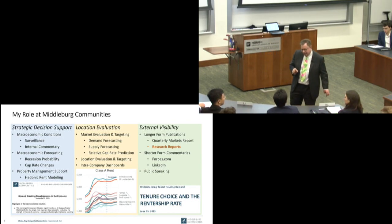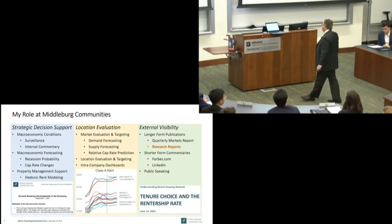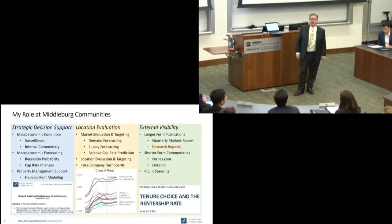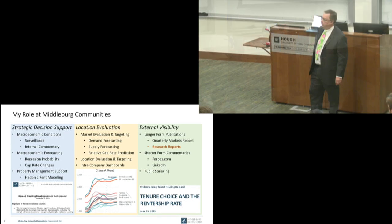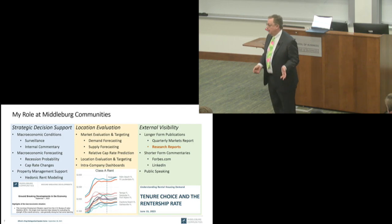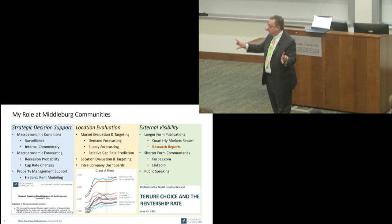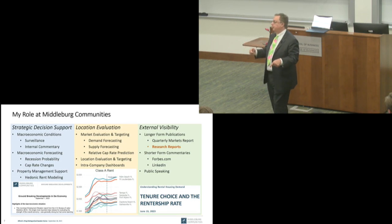Andrew asks what factors influenced the decision to sell all properties a couple of years ago — did they predict a recession? We predicted there was a lot of uncertainty and that prices were really good. Would you buy Tesla stock right now? It may go up a lot, but what's more likely is it'll collapse. All you can do is play the percentages. In 2020 and 2021, the percentages said sell everything you can.